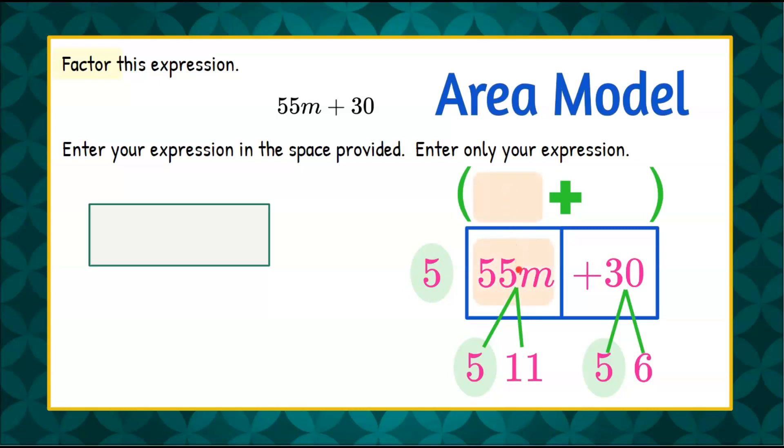So if we factored out the 5 here we have 11 and our m remaining. So we're going to put in this box 11m. And when we do that we take that factor 11m. 5 times 11m is 55m.